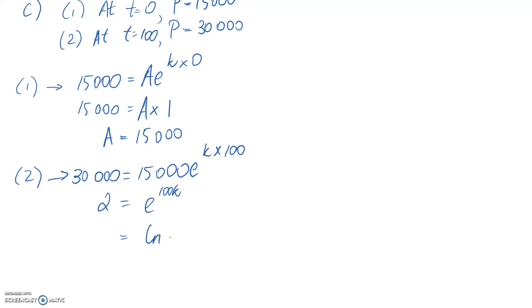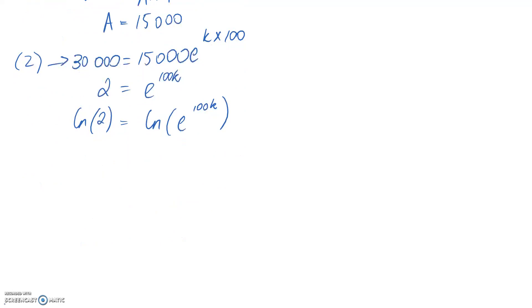To get k out of the exponent, take the natural log of both sides: ln(2) = ln(e^(100k)). Using the log rule, the power comes down: ln(2) = 100k·ln(e). Since ln(e) = 1, we have ln(2) = 100k. Therefore, k = ln(2)/100.